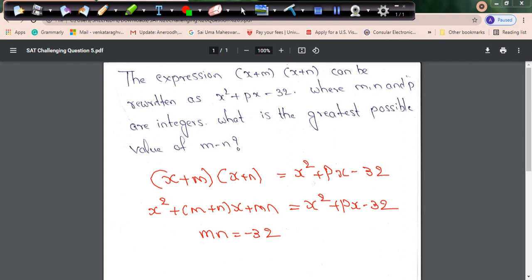So I get minus 1 into 32 or 1 into minus 32. I can also get minus 2 into 16 or 2 into minus 16. I can also get minus 4 into 8 or 4 into minus 8. So I get different possibilities. For M minus N to be maximum, I would be taking M as 32 and N as minus 1.